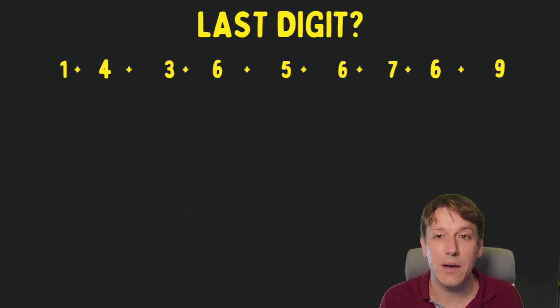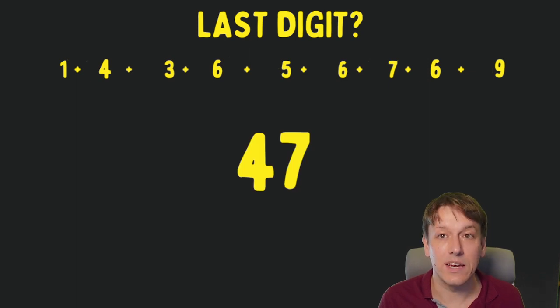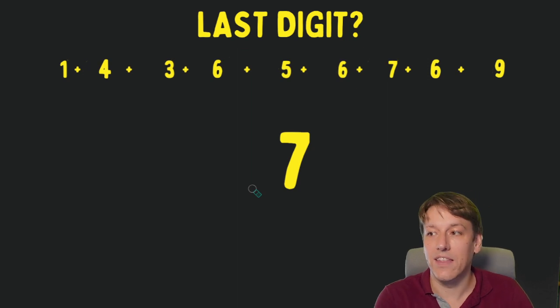So we have the last digits of each of those powers. To get the last digit of the sum then I just add all of those together and work out what the last digit is. So if we add all of these numbers together, you can check that we get 47, and then the last digit of 47 is just 7, and that must be the answer to this problem.